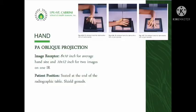Next up is the PA oblique projection of the hand. This is used to investigate fractures and other pathologic conditions. The same sizes of image receptors are used as well as the same patient position.